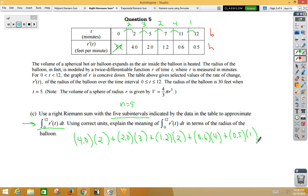If they give you a calculator, throw that in the calculator and get a value. If not, then you need to multiply and add up by hand. Use correct units to explain the meaning of this in terms of the radius of the balloon. So, we're talking about the total change in the radius, the total amount of change over the time frame from 0 to 12 in feet.